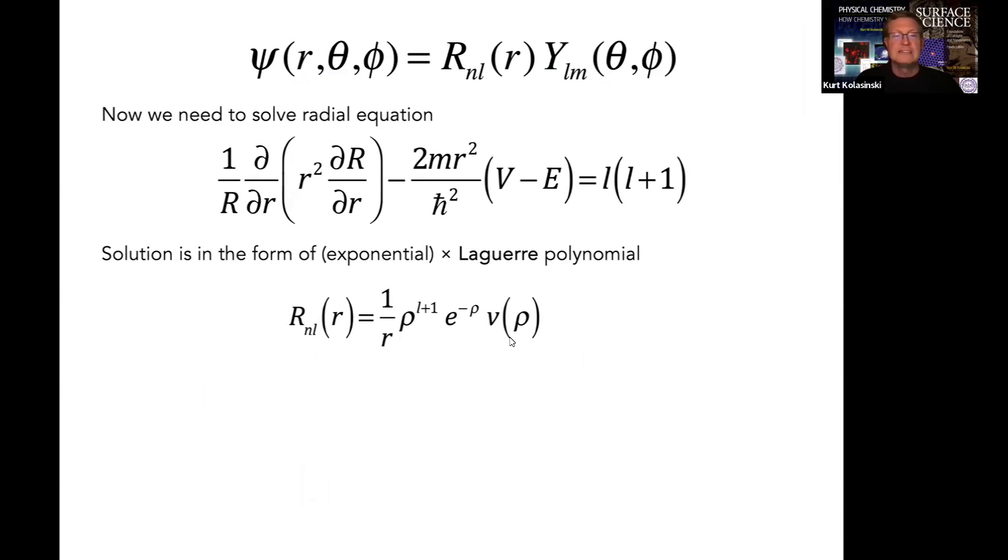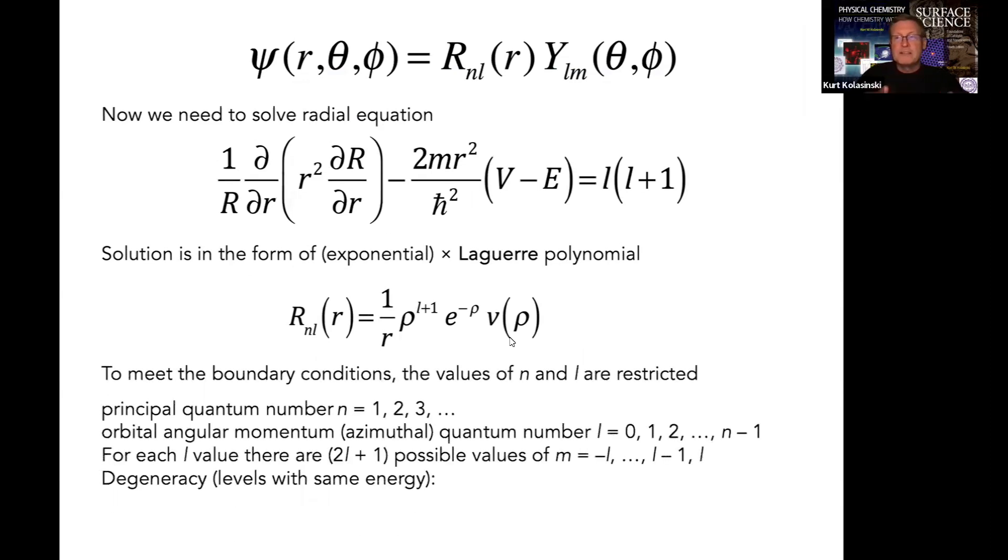Once we apply the boundary conditions to the radial equation, we're going to find we have three quantum numbers: n, the principal quantum number; l, the orbital angular momentum quantum number; and m sub l, its projection. The principal quantum number is one of the counting numbers, an integer starting at one.